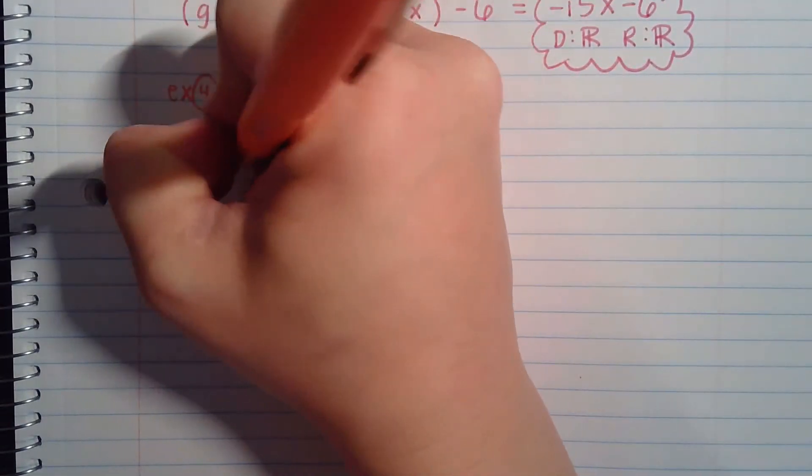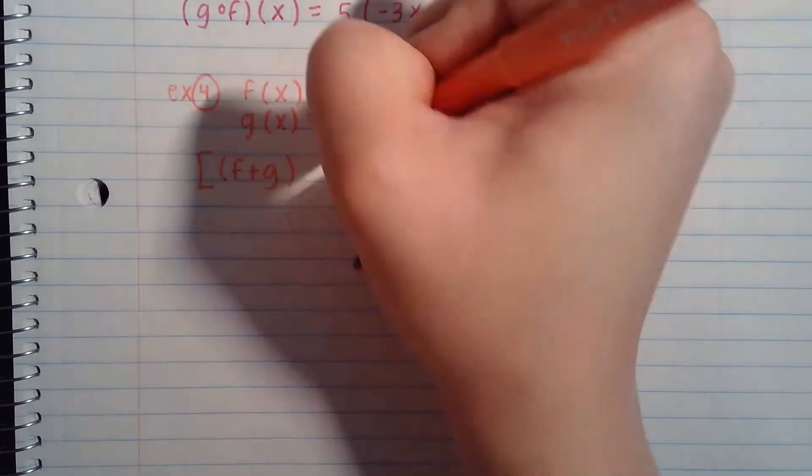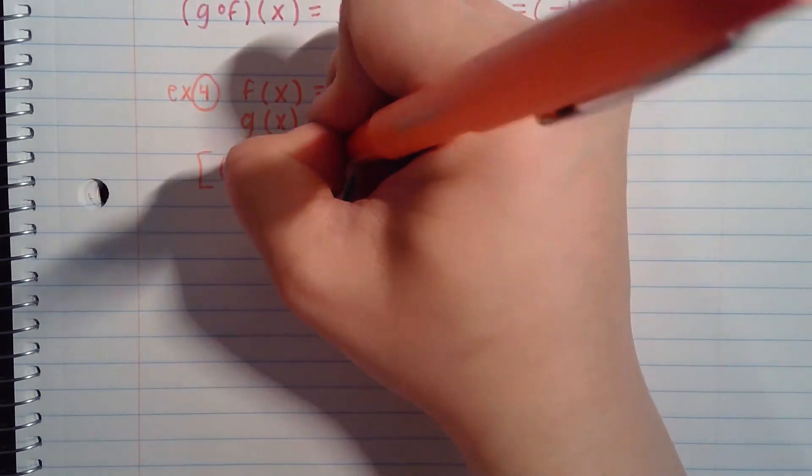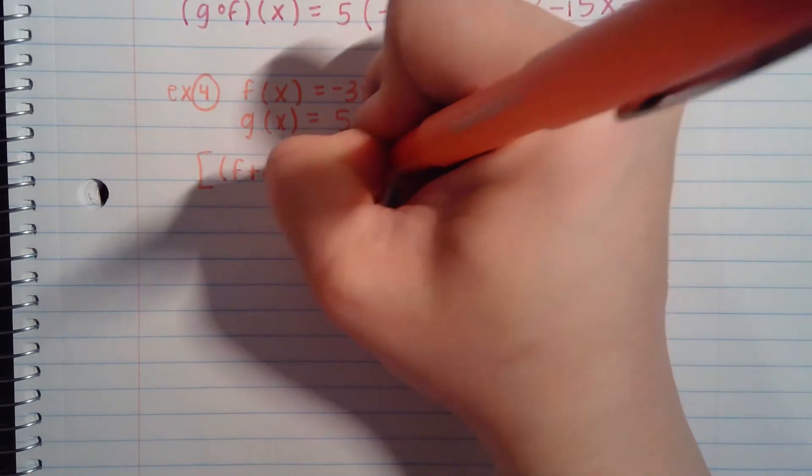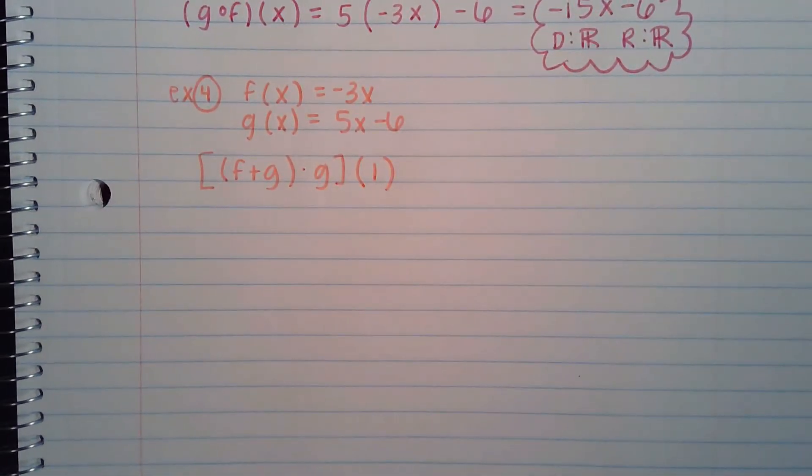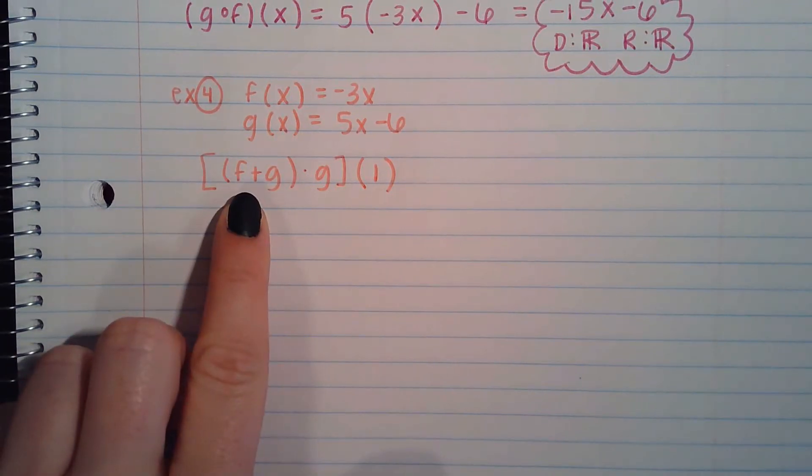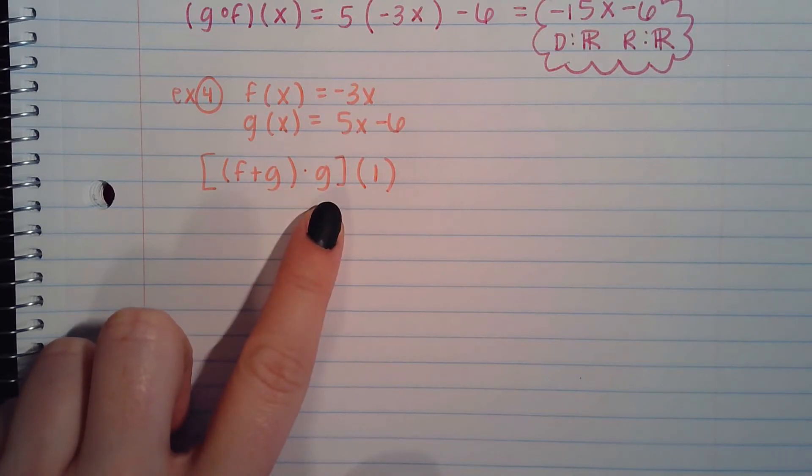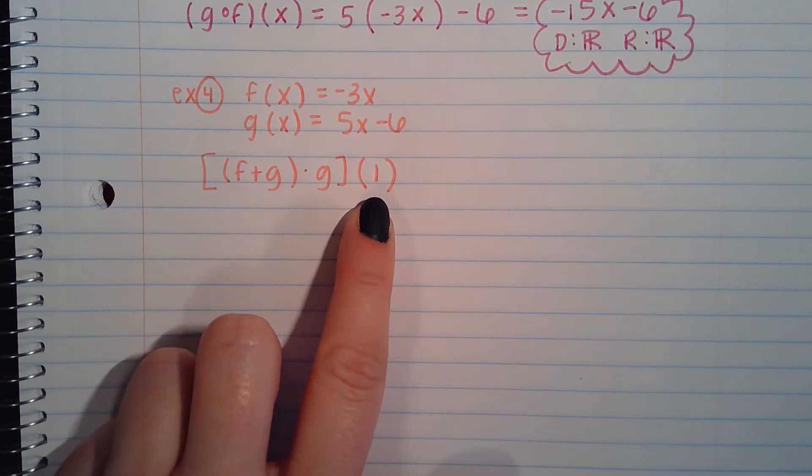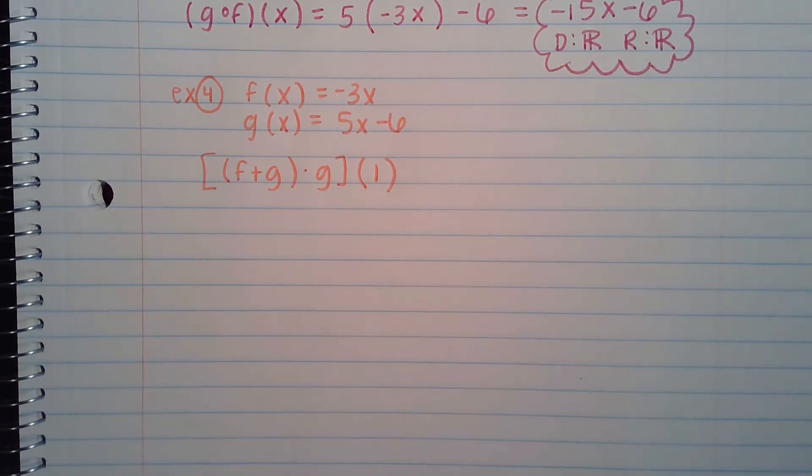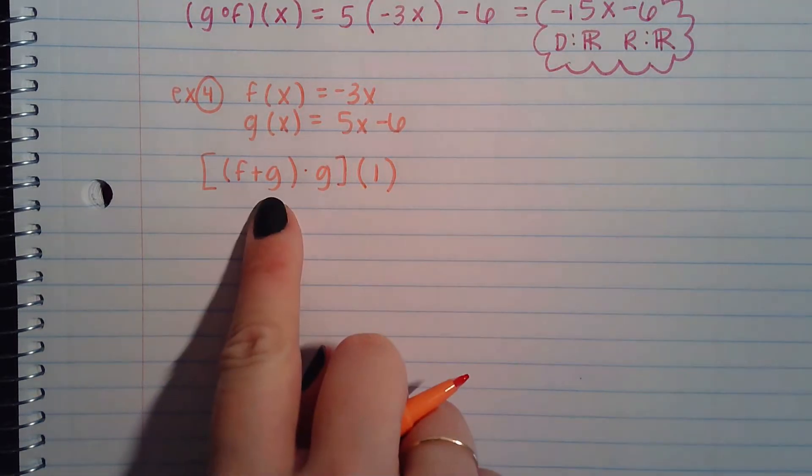And let's see if we can solve this: (f+g)·g of 1. So what this is saying, you always want to stop and pause and think about what is this actually trying to get at. This is saying first we will add the f plus the g equation. We'll take the answer we get and we'll multiply it times the g equation. After we've done that, we will plug in 1 anywhere we see an x and then solve. So in the end, your answer should just be one number.